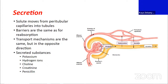We talked about all the different pressures that drive exactly how much fluid is going into the nephron. And we talked about the process of reabsorption. We had our mass reabsorber in our proximal tubule, meaning that we are reabsorbing many things that were in this filtrate and moving them back into our bloodstream.